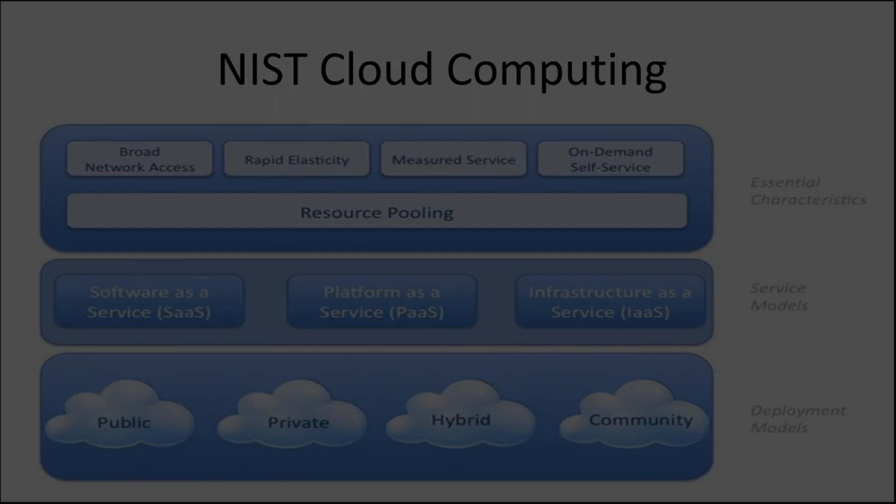Deployment models describe how we deploy our cloud services. A public cloud is available broadly, while a private cloud means the service is only for your organization or membership. A hybrid cloud is a combination of one or more deployment models — for example, many organizations use both public and private deployment models, which is considered a hybrid cloud. A community cloud is where you may have a military organization, nonprofit, or educational consortium sharing resources.